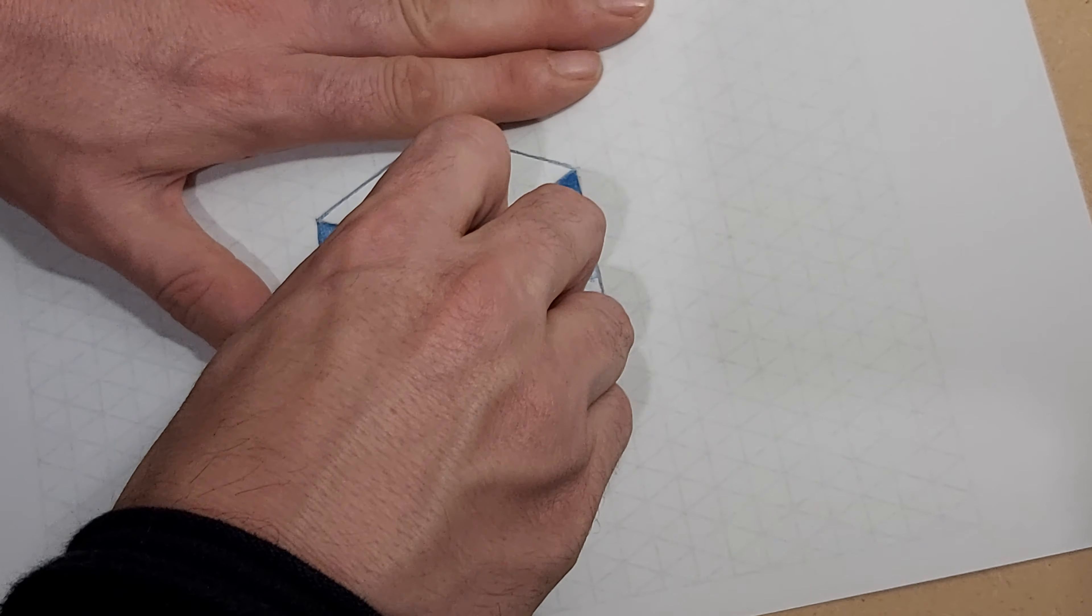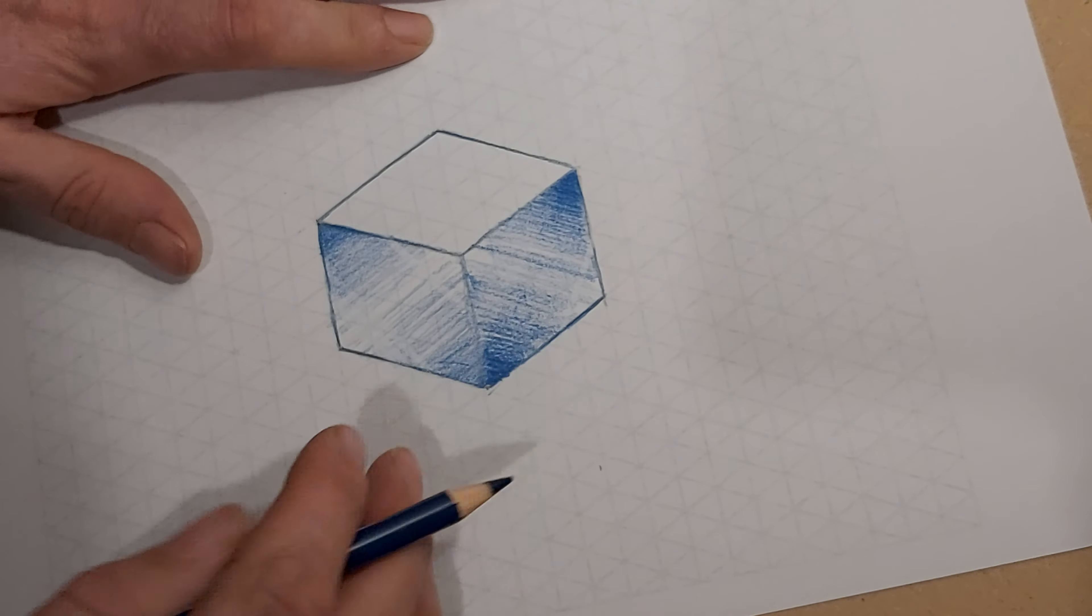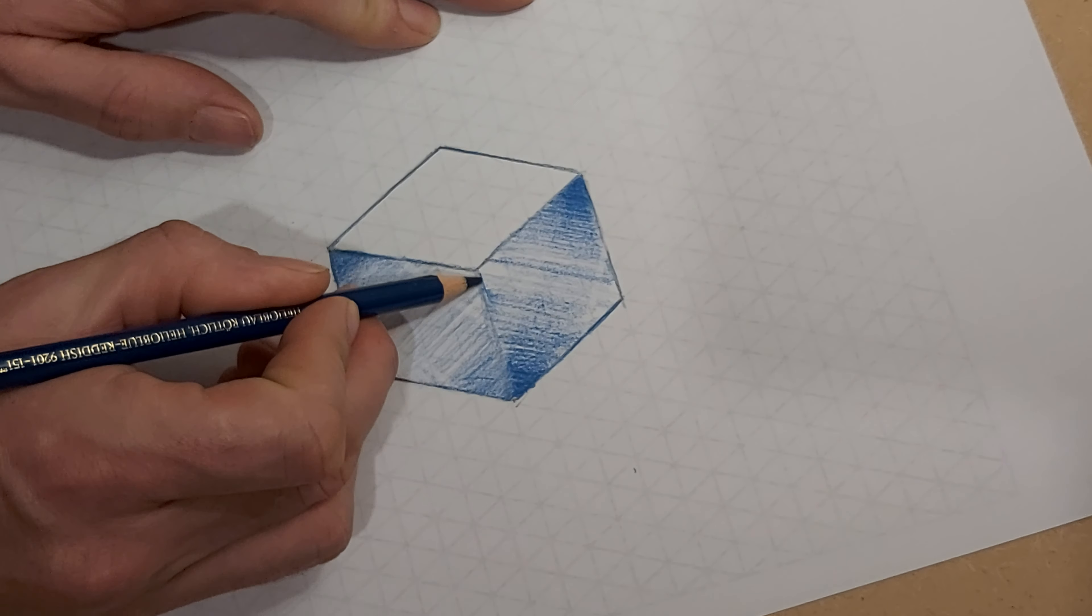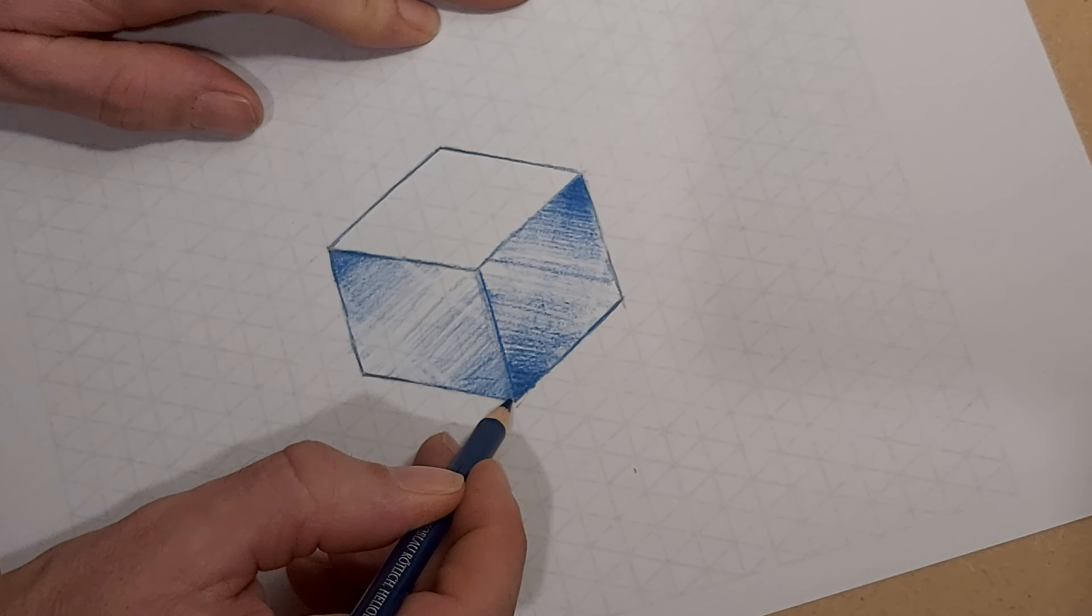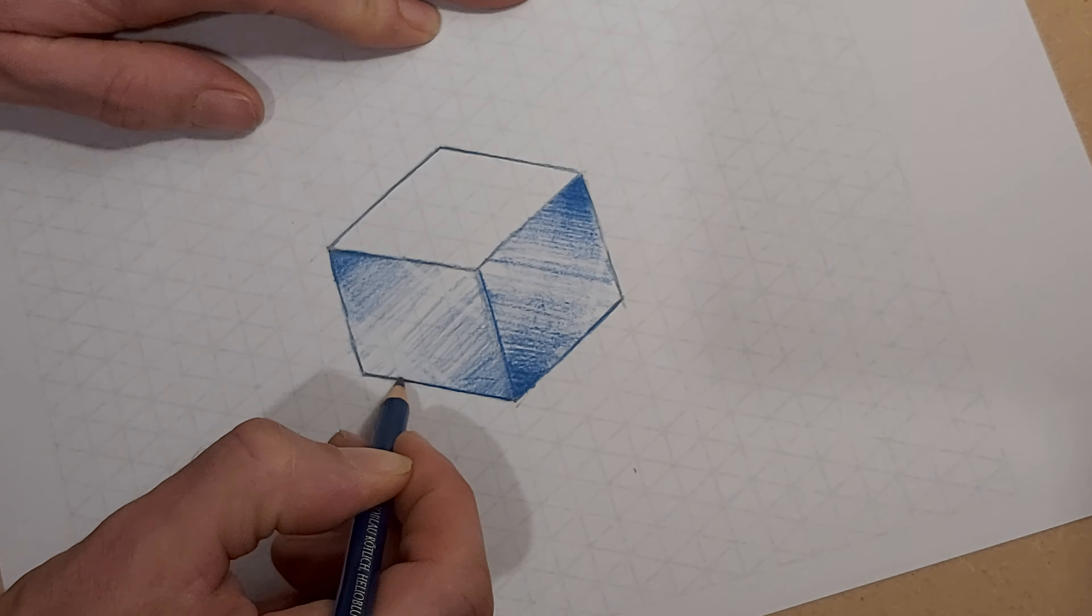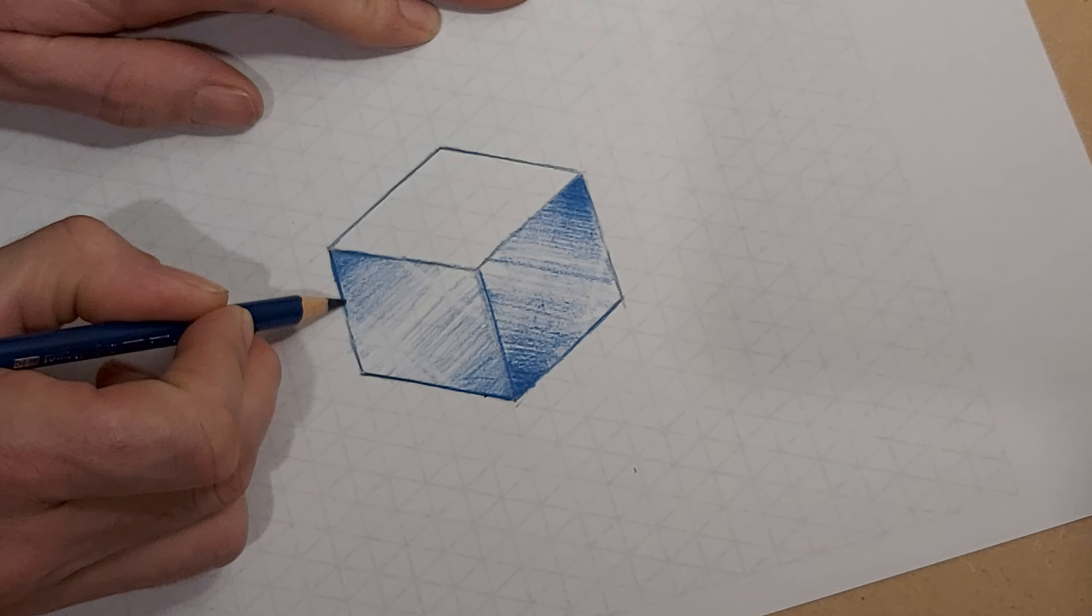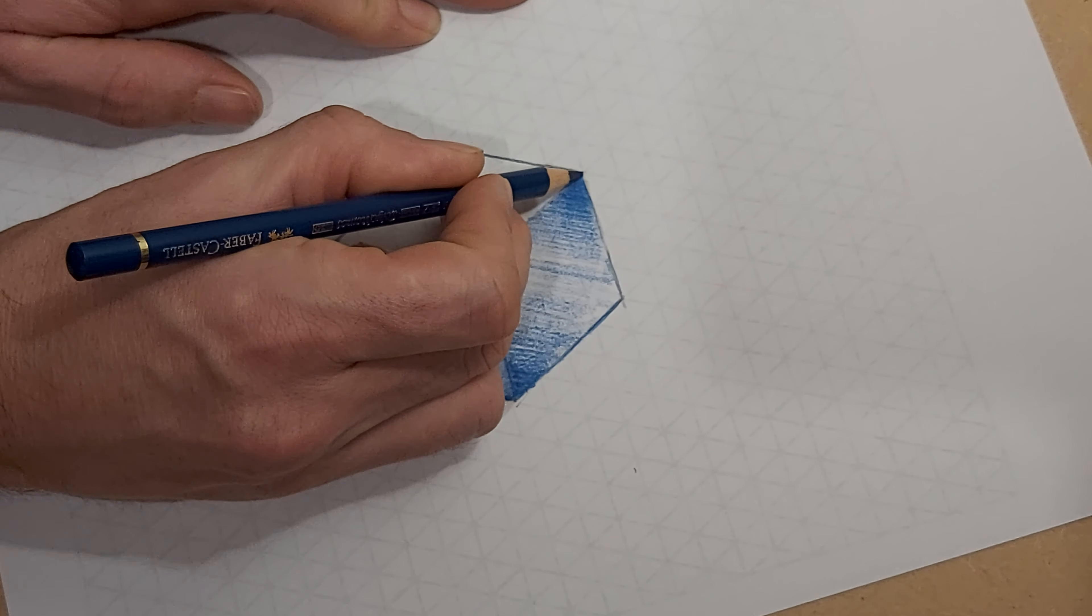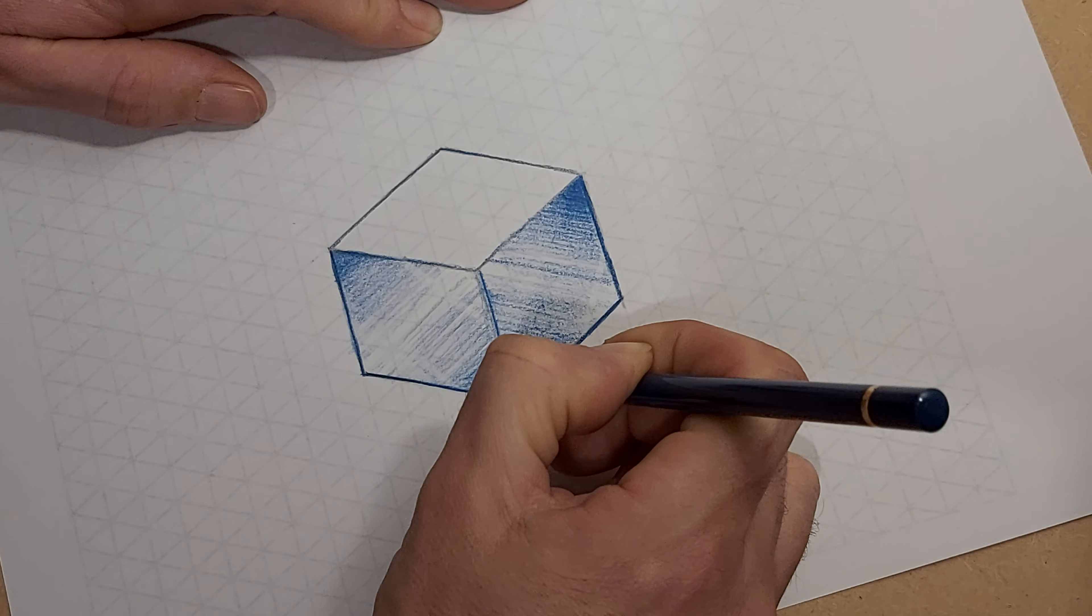I might then just go over this outline around where I started again. Thick lines are very important when you do an isometric drawing. Make sure they are visibly thicker.